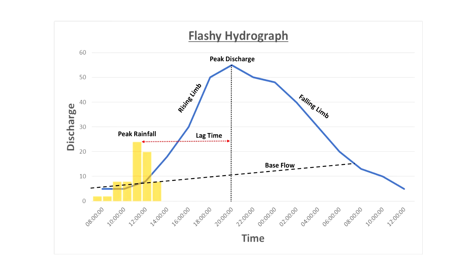Lag time is one of the most important pieces of information on this hydrograph. The lag time is the time it takes between peak rainfall and peak discharge — this is how quickly water is transferred into the river. Once the discharge has peaked, there will be a gradual reduction and the falling limb will track the discharge back to its normal flow.